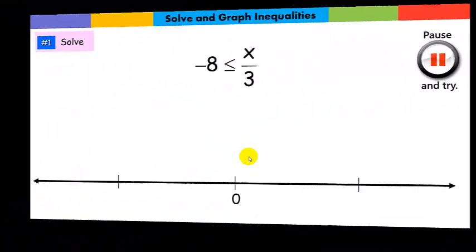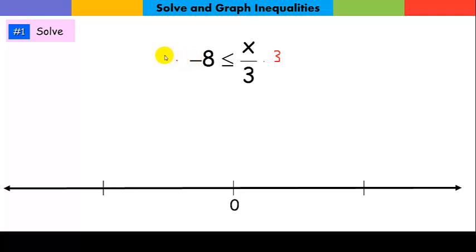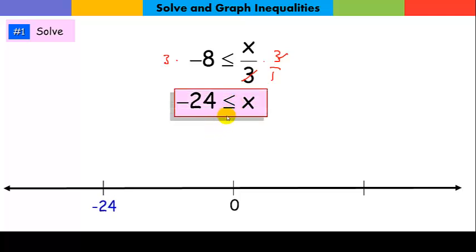Okay, let's try a couple of problems. I want to get x alone, so I'm going to multiply both sides by 3. If I do that, these will cancel, and I get x is greater than or equal to negative 24. So my boundary point is at negative 24 — that's our solution. Notice the way I drew my number line: I don't want you to draw out a number line with every single number. All I want is a line, a zero, and two little tick marks — one representing negative, one representing positive. Find the negative, notice it's a closed or filled-in boundary point, and it says all x's greater than negative 24.